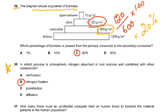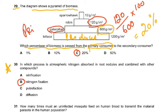The diagram shows a pyramid of biomass. Which percentage of biomass is passed from primary consumer to secondary consumer? Lettuce is the producer, caterpillar is the primary consumer, and the robin is the secondary consumer. The producer had 1200 g/m², caterpillars 600 g, robin 120 g, and sparrowhawk 12 g. So 120 divided by 600 gives 20%, which was the answer.